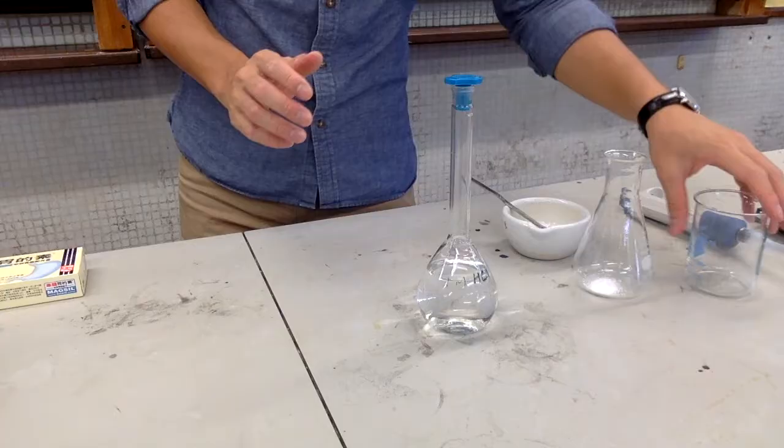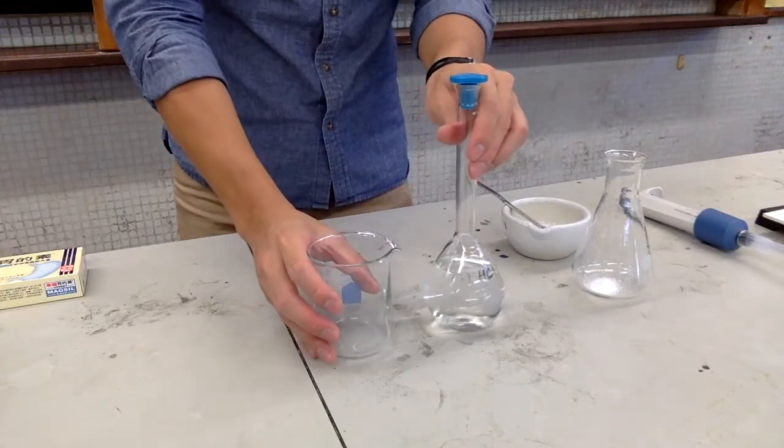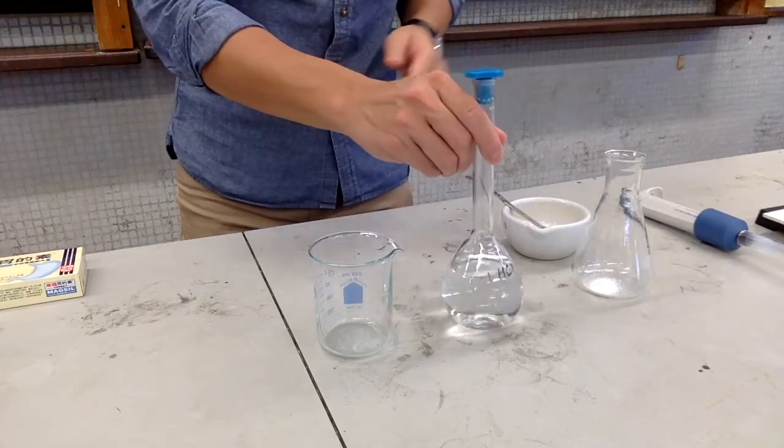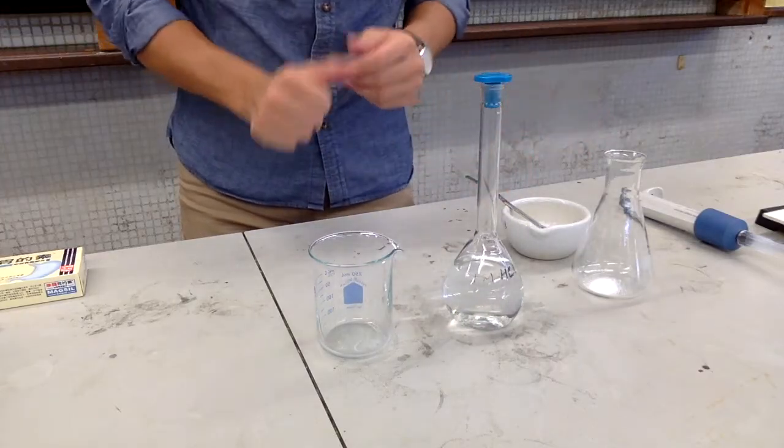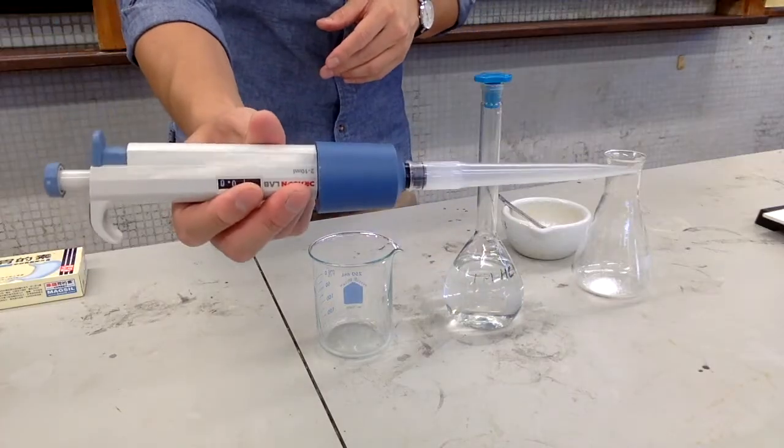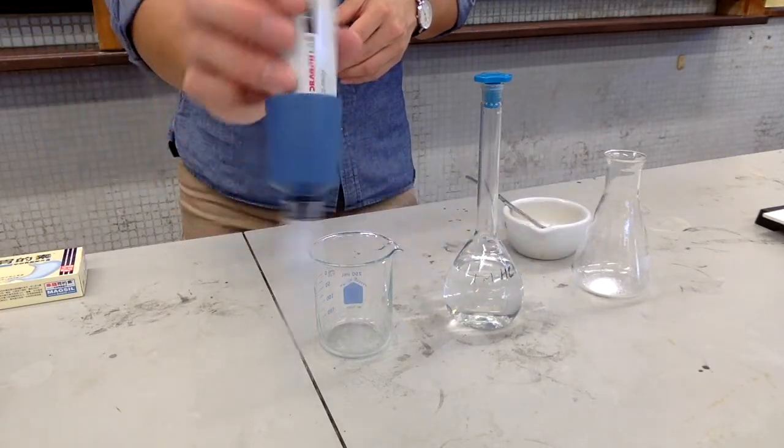Now, we are going to measure accurately 20 cm³ of 1 molar hydrochloric acid into the conical flask. To do that, we are going to use a 10 ml micropipette.